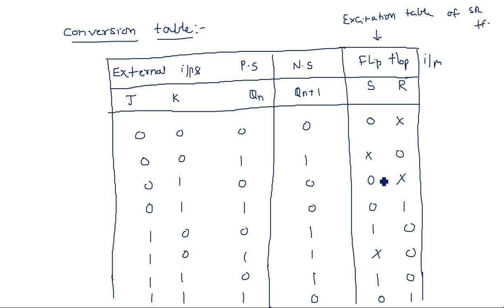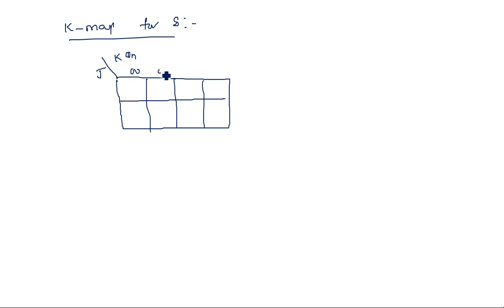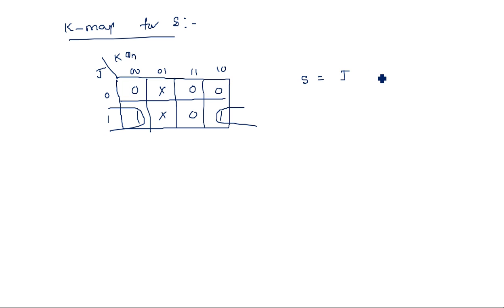Now we need to identify the Boolean expression using K-maps. For the K-map for S, there are 8 values so a 3-variable K-map is sufficient. The variables are J, K, and Qn with the 8 combinations. Filling in the S values from the conversion table and grouping, we get S = J·Qn-bar.